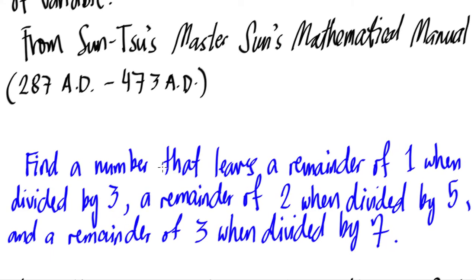Find a number that leaves a remainder of one when divided by three, a remainder of two when divided by five, and a remainder of three when divided by seven. So we need to find a number that gives us a remainder of one when we divide by three, two when we divide by five, and three when we divide by seven.